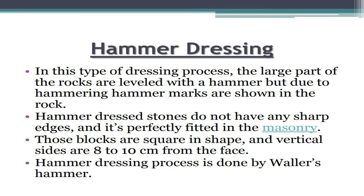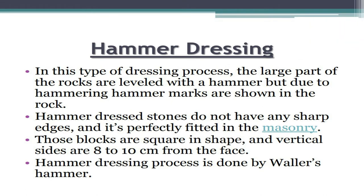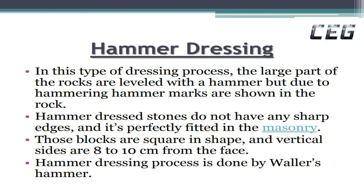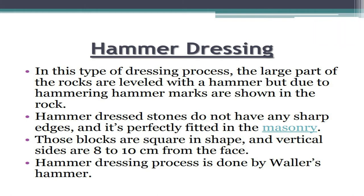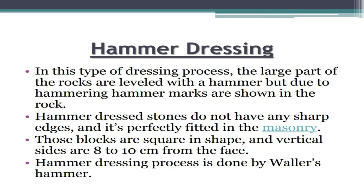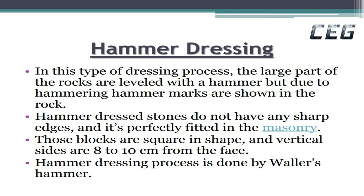Hammer dressing: In this type of dressing process, the large parts of the rocks are leveled with a hammer. Due to hammering, hammer marks are shown in the rock. Hammer dressed stones do not have any sharp edges and are perfectly fitted in the masonry. Those blocks are square in shape and vertical sides are 8 to 10 cm from the face. Hammer dressing is done by a Waller's Hammer.